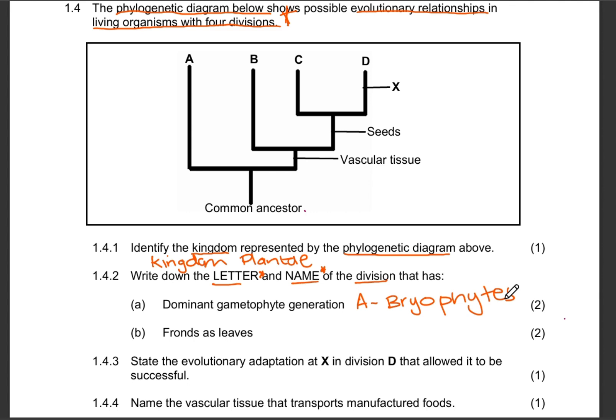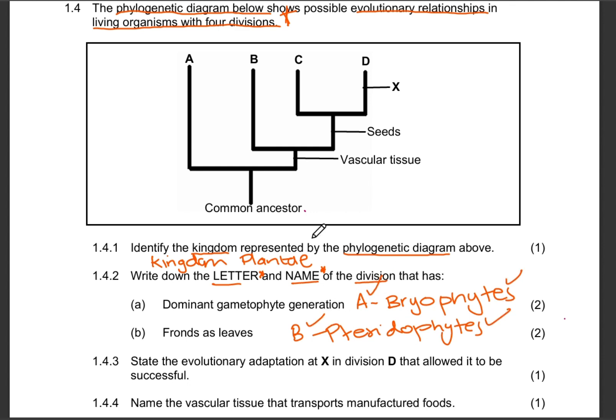The second part of 1.4.2: we need the letter and name of the division that has fronds as leaves. Obviously, that is the pteridophyte division, so that would be Division B — pteridophytes. How this would be marked: you'd get one mark for the letter and one mark for the name.